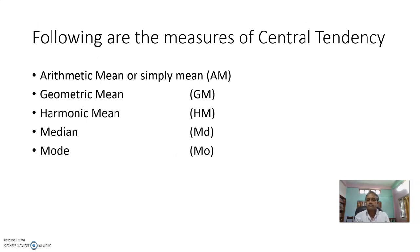Following are the measures of central tendency: arithmetic mean or simply mean, geometric mean, harmonic mean, median, and mode.